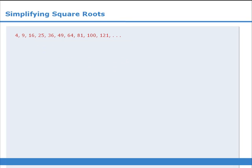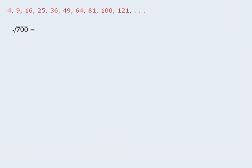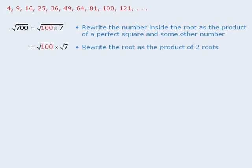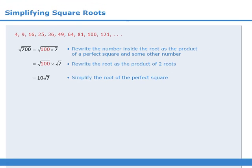Let's summarize the primary technique for simplifying square roots. Our first task is to rewrite the number as the product of a perfect square and some other number — here we can rewrite 700 as 100 times 7. Next, we rewrite the root as the product of two roots. Finally, we simplify the root of the perfect square. In this example, the square root of 100 is 10, and the square root of 7 cannot be simplified, so we leave that as it is.